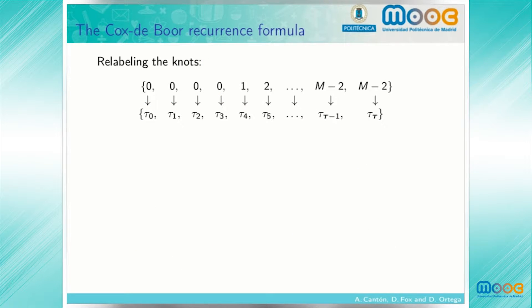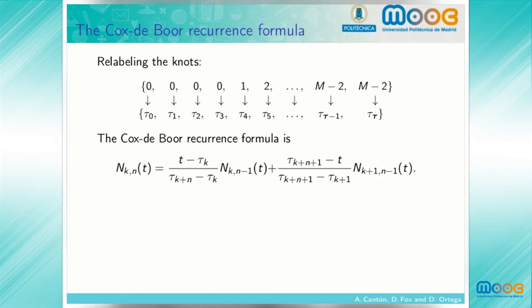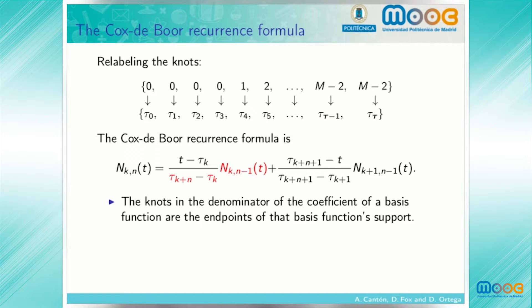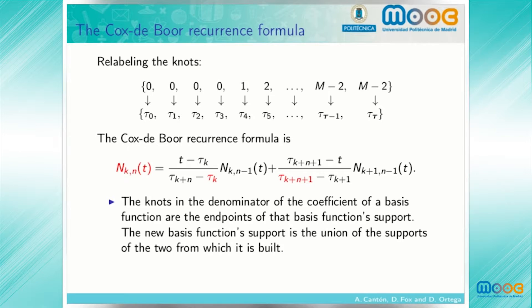It's convenient to relabel the knots. The first knot is called tau sub 0, the second knot tau sub 1, and so forth up to tau sub t. The Cox-de Boor recurrence formula then expresses the basis function k sub n as a linear combination of the basis functions with indices k n minus 1 and k plus 1 n minus 1, with coefficients expressed in terms of the relabeled knots. The knots in the denominator of the coefficient of a basis function are the endpoints of that basis function's support, and the new basis function's support is the union of the supports of the two from which it is built.